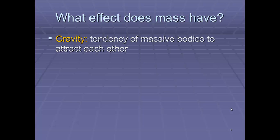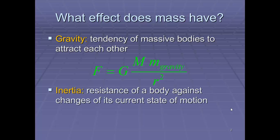So first things first, let's get some ideas straight. What effect does mass have? Well, with gravity, it's the tendency of massive bodies to attract each other, and that follows Newton's universal law of gravitational attraction. And then we also have inertia. Inertia is basically the resistance of a body against the changes of its current state of motion, and that relates to F equals ma.